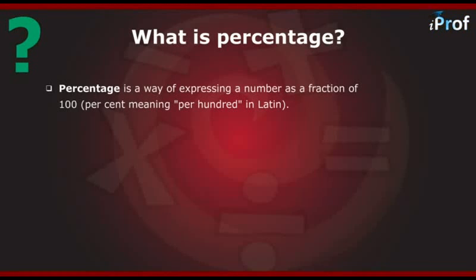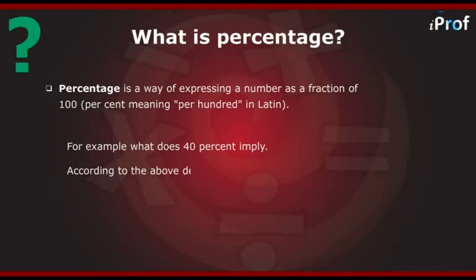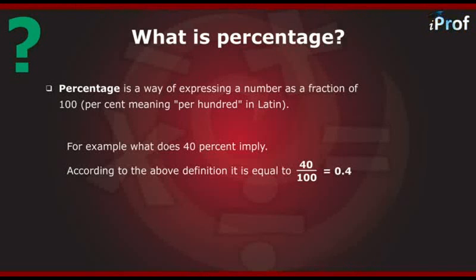Percentage is nothing but a way of expressing a number as a fraction of 100. The word percent means per 100 in Latin. For example, what does 40% imply? According to the above definition, it is equal to 40 divided by 100, which is equal to 0.4.